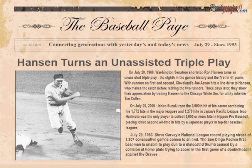On July 29, 1968, Washington Senators shortstop Ron Hansen turns an unassisted triple play, the eighth in the game's history and the first in 41 years.